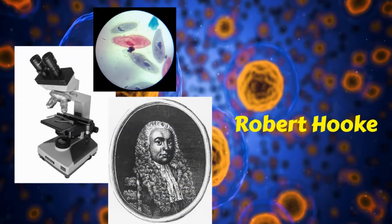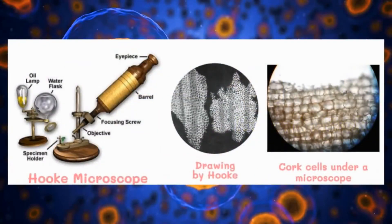The first person to observe cells as microscopic structures was the British scientist Robert Hooke. When Robert Hooke carefully examined a very thin slice of cork, he thought the close-up view resembled small empty rooms. He referred to these tiny rooms as cells, from the Latin word cellulae, which means small rooms.